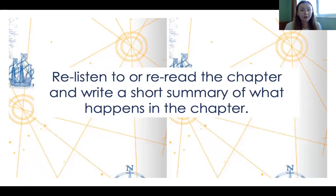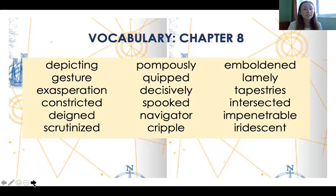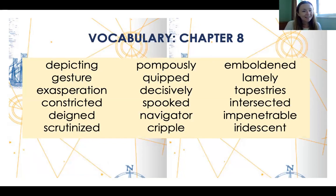Chapter eight: re-listen or re-read and write a short summary. Vocabulary includes: depicting, gesture, exasperation, constricted, deigned, scrutinized, pompously, quipped, decisively, spooked, navigator, cripple, emboldened, lamely, tapestries, intersected, impenetrable, and iridescent.